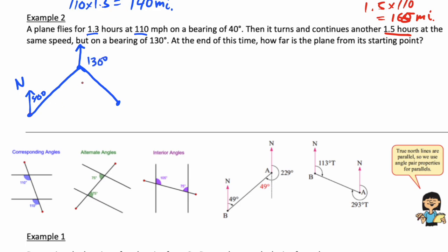We're talking about 130 bearing - that's more than 90, so it's going to be below west here. The question is asking for this distance here. Let's call it X. We have these distances - this is 143, I made a mistake earlier. 143 miles. And this one's 165.